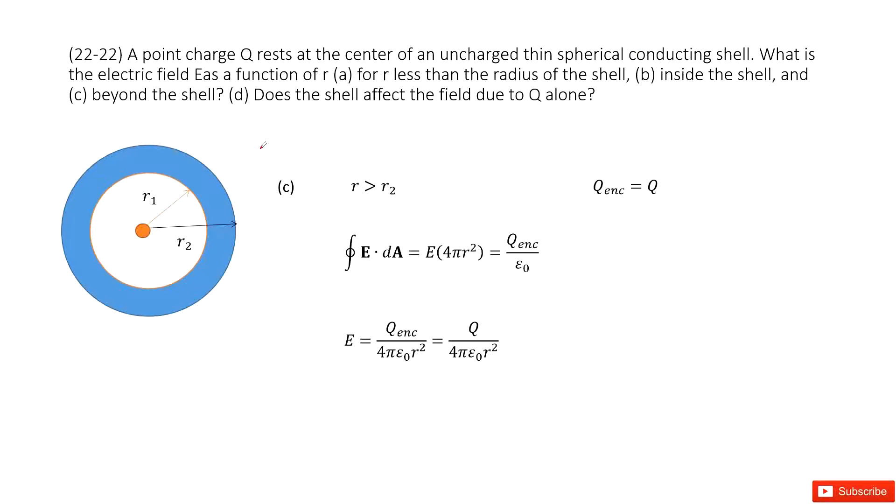The third one asks you beyond the surface. So beyond the surface, we can still draw the Gaussian surface. Look like this one. We can see enclosed charge is just a positive Q. And this is a point charge. And this is uncharged conducting shell. So the two, the net charge is 0. Uncharged. So enclosed charge is just Q.